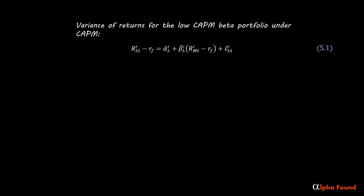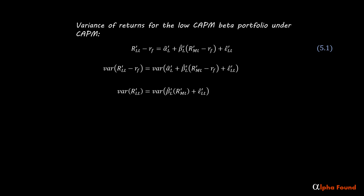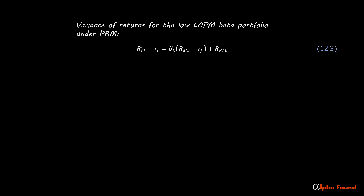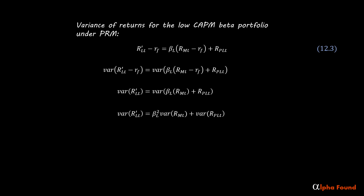Recall from the video on Jensen's alpha that the ex post variance of an asset using CAPM components has this derivation: take the variance of both sides, isolated constants drop out, constant coefficients get pulled out and squared, and of course we change to a better-looking notation. Variance of returns for the low CAPM beta portfolio under the perturbation risk model follows the same steps: take the variance of both sides, isolated constants drop out, constant coefficients get pulled out and squared, and we change to a better-looking notation.